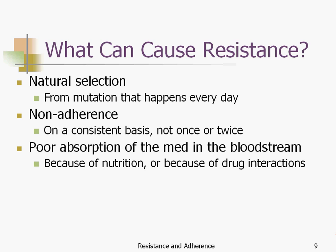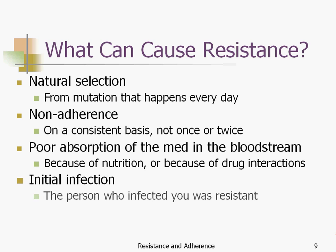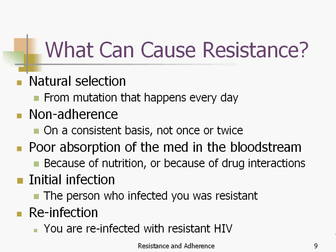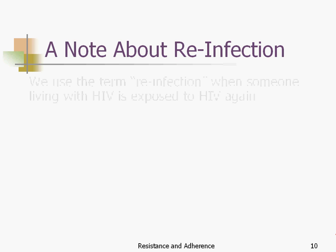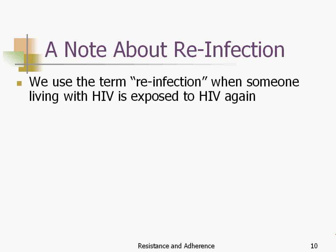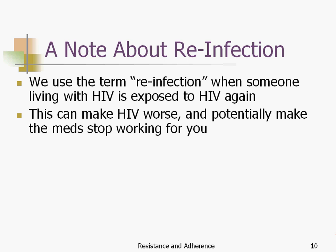Drug interactions can also lead to resistance — some drugs in the liver slow down or speed up the processing of other things that go through it. Initial infection is another cause: the person who infected you may have had resistant virus. Reinfection can also cause resistance — that is, someone is reinfected with resistant HIV. If the other person had virus resistant to, say, AZT and you're on AZT, there's now a population of virus in your body that doesn't care if AZT is there — it's going to keep reproducing. That can be a problem.